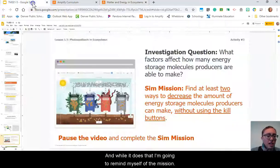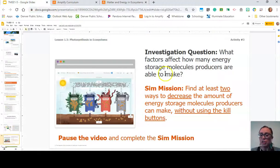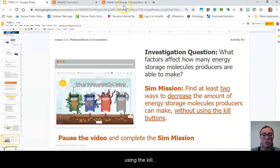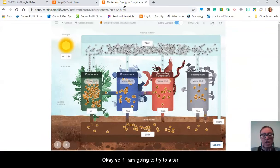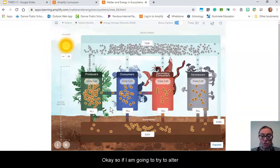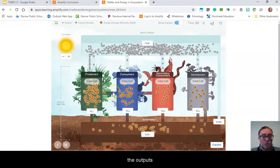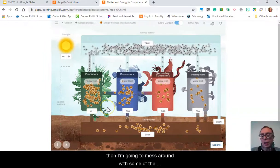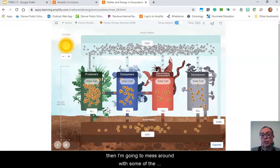While it does that, I'll remind myself of the mission: find at least two different ways to decrease the amount of energy storage molecules producers can make without using the kill buttons. If I'm going to alter the outputs of a producer, I'm going to mess around with some of the inputs.